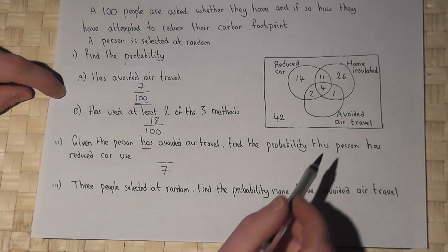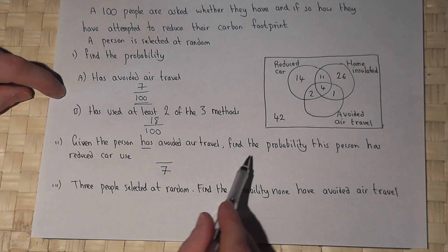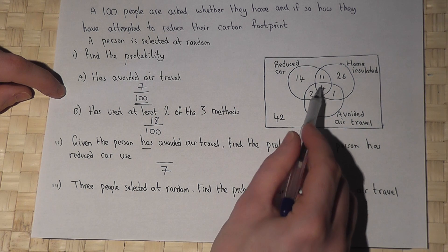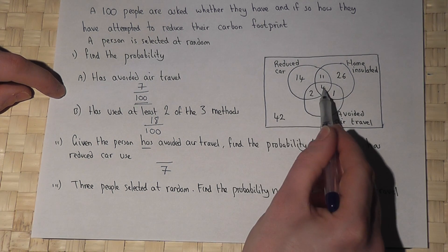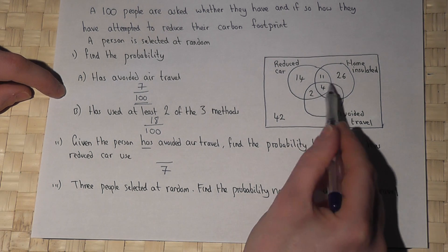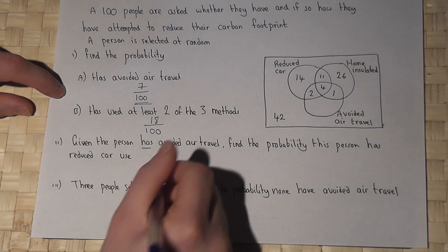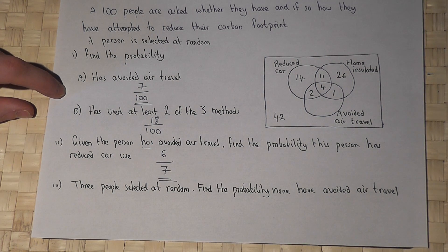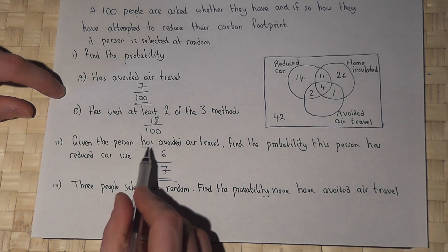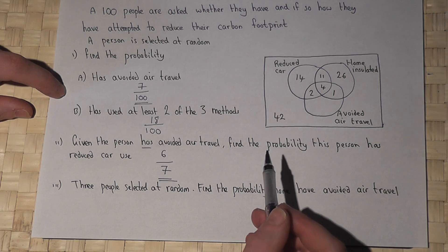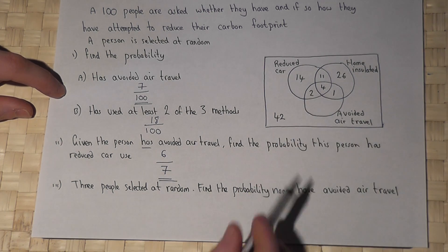And of those seven people, the number of people who reduced their car use are the people in the reduced car use circle, and that's two and four. There were six people out of the seven who reduced their car use, so the answer is six out of seven. So on a Venn diagram, if you're asked a conditional or given probability, we look at the relevant circle and just that circle.